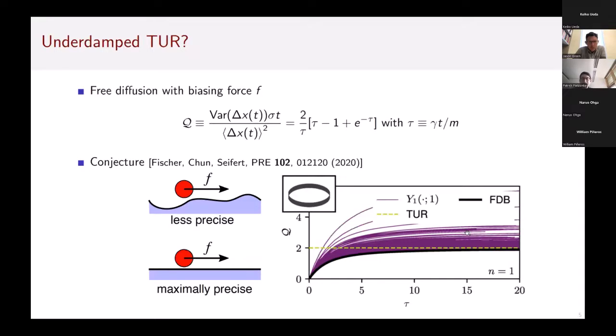The idea is that whenever we use some pattern of a potential landscape, this will become less precise, so that uncertainty product will be bigger. That is indeed what was observed for a one-dimensional system. If you look here in purple at different uncertainty products for different randomly drawn potential landscapes, we are always above this bound given by free diffusion. So it looked like in the underdamped case the TUR would still hold.